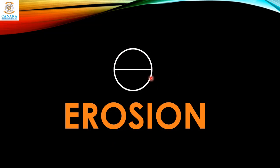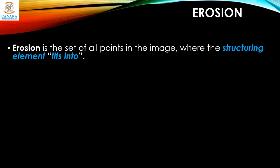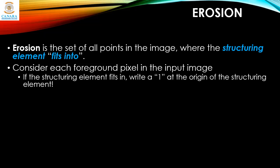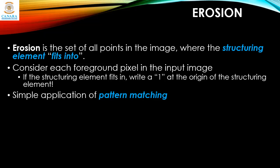Now let's look at erosion, given by a minus symbol inside a circle. Erosion is the set of all points in the image where the structuring element fits entirely inside the foreground. The key difference from dilation is that in dilation the structuring element only needs to touch the image, but in erosion it must fit fully inside. Consider each foreground pixel: if the structuring element fits, write a one at the origin of the structuring element. It is basically a simple application of pattern matching. The input is a binary image and the structuring element contains only ones.